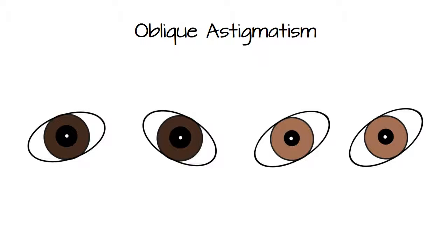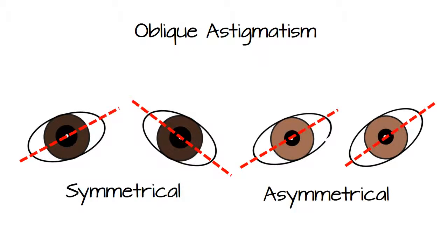Oblique astigmatism. There's not a whole lot to say about oblique astigmatism except that it exists and it can be either symmetrical or asymmetrical and that's that.